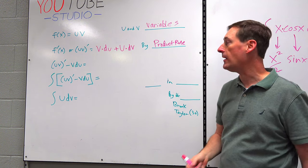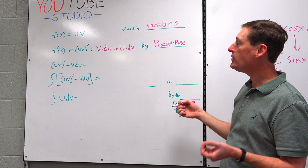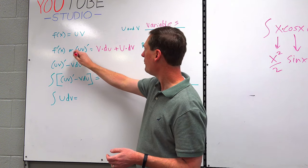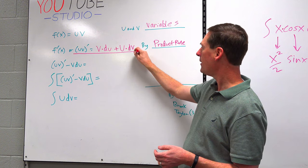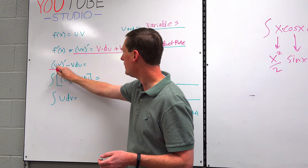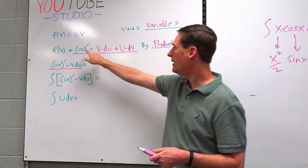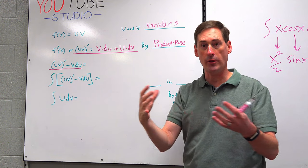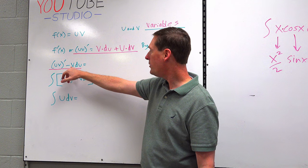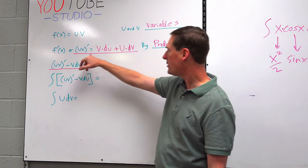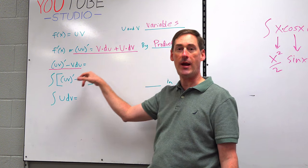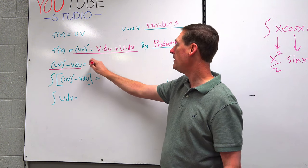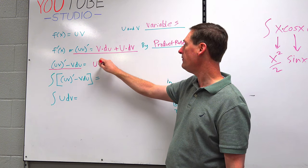Now, what did mathematicians do to crack the case here? How did we get from the product rule step to this new expression? The uv quantity prime is still there. We're doing the product rule of uv. Where did this v·du come from and its subtraction? It was here, so I just subtracted it from both sides. What's left over? u times dv.